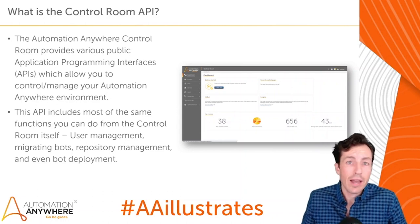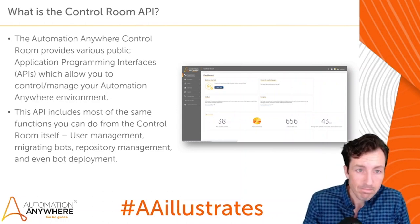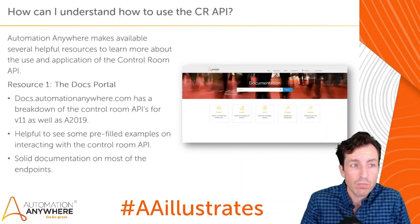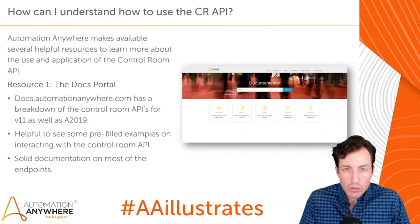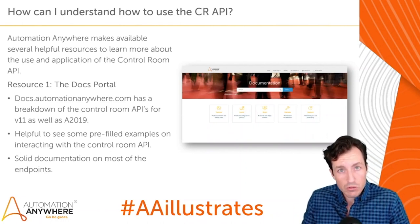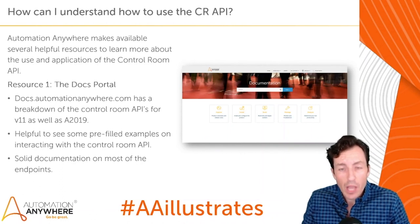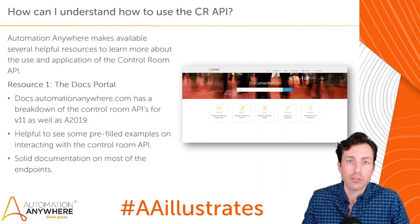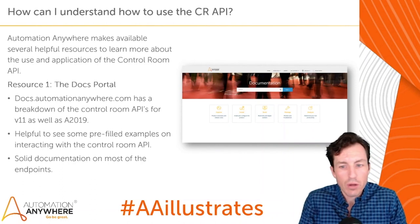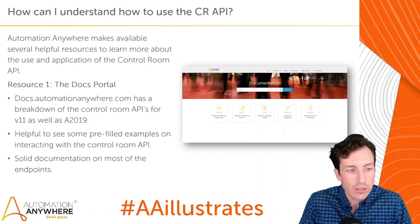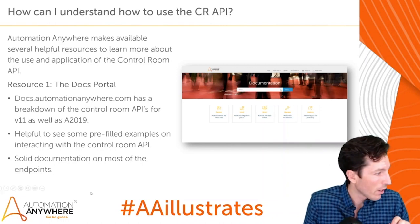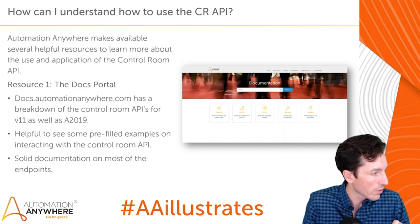There are several resources available to learn more about the Control Room API. I'm going to walk you through two that are well known and then introduce you to a third. The first is the docs portal, located at docs.automationanywhere.com. Let me bring that up.